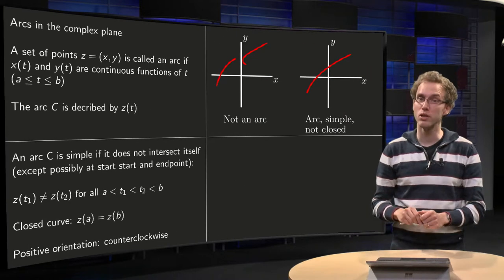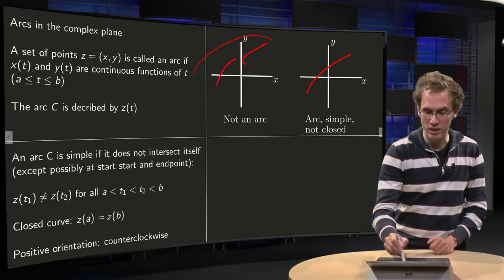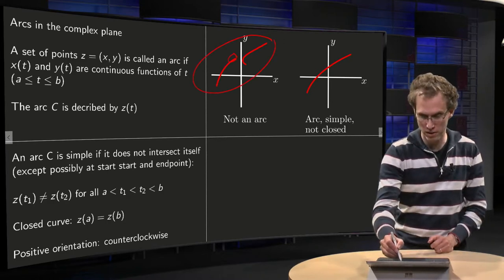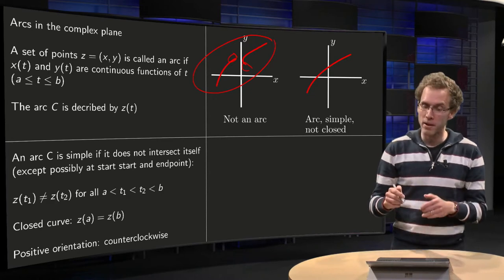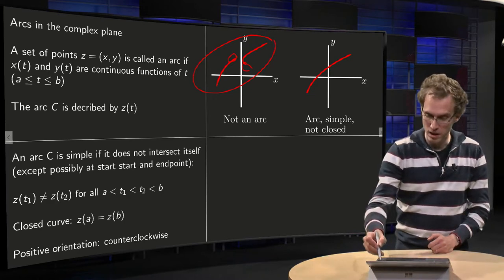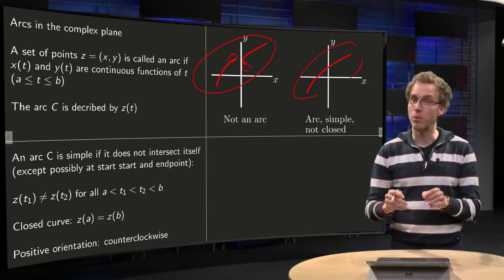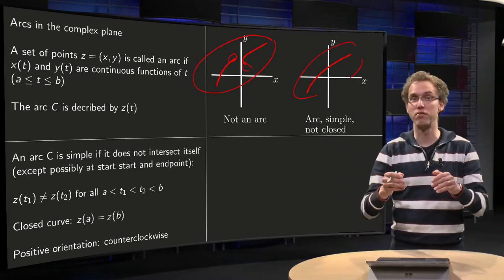Let's take a look at some examples. In this first picture, this curve is not an arc because we jump from here to there, not described by a continuous function. The second picture is an arc which is simple, doesn't intersect itself, but not closed.